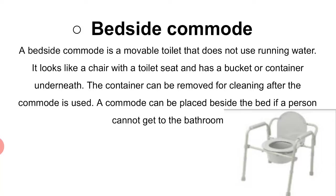Next item is bedside commode. A bedside commode is a chair with a hole at the seat and at the other side, you can choose one with wheels. It is a simple chair with a big opening, which means the chair will be used as needed — where a patient can pass urine or motion. The pan can be removed and cleaned up — urination and defecation can be managed easily. As a patient who cannot go to the bathroom — bathroom tak nahi ja sakte — to unke liye ye bedside commode available karwai jaati hai.